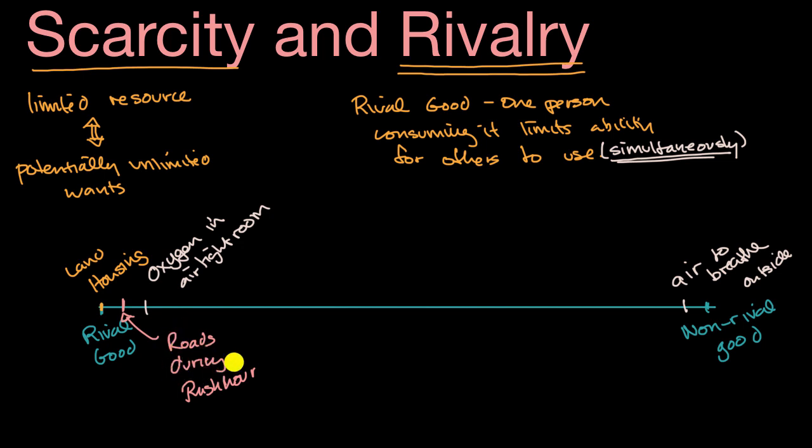But then you could imagine roads in the middle of the night are non-rival goods. If I decide to take a drive at three in the morning on most highways, it doesn't make it any harder for another person to take a drive on that highway simultaneously. So roads at 3 a.m. in most places is closer to being a non-rival good.